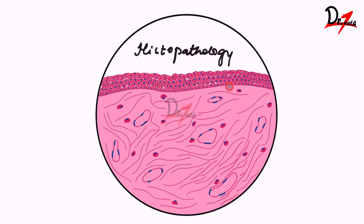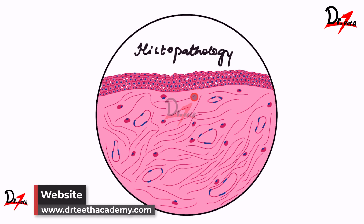Coming to the epithelium, you can find that there are no rete pegs — no extensions of the epithelium down into the connective tissue. We have blunt rete pegs or no rete pegs at all, and we have a parakeratinized stratified squamous epithelium. This covers the histopathology of fibroma.